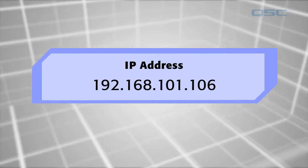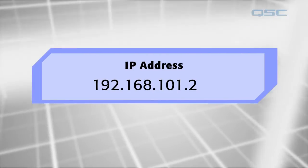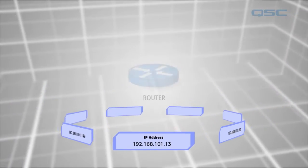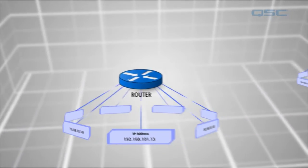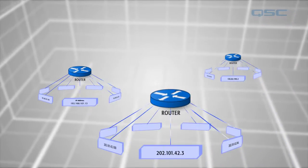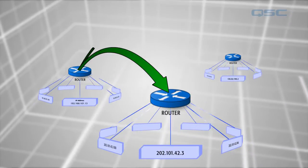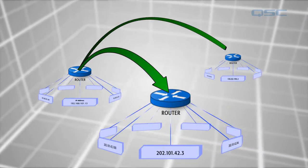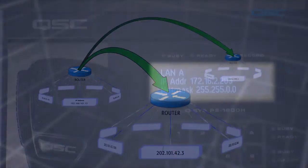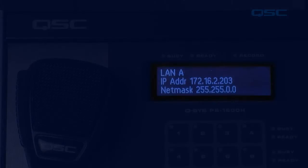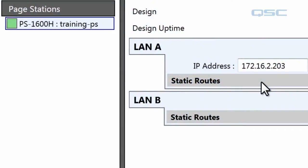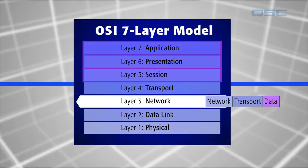You can choose this address manually, or you can have any device automatically assigned an IP address, which is usually handled with your network router. Routers specifically deal with transporting data from network to network, which is why you need one for the devices on your network to access other networks such as the internet. Q-SYS devices all have their own IP address, which you can modify using the configurator tool in the designer software. Because of this, QLAN is considered to be a Layer 3 service.